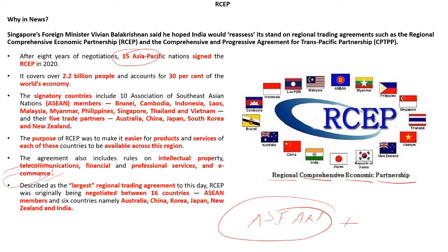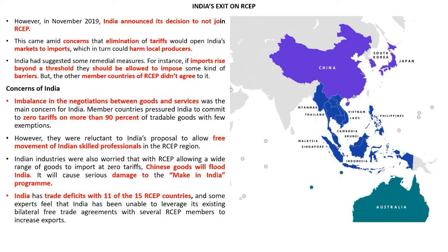RCEP was originally negotiated between 16 countries, but India has not put its signature on the RCEP deal. In November 2019, India announced its decision not to join RCEP. The main reason for India exiting the RCEP deal is that local producers would be adversely affected.